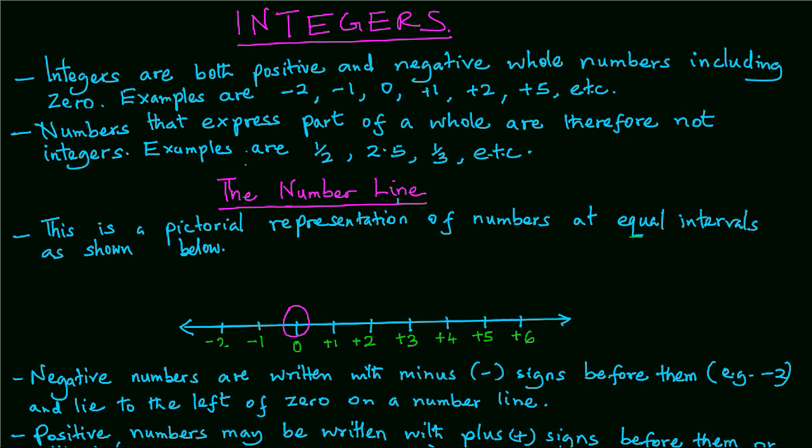Integers. Integers are both positive and negative whole numbers, including 0.